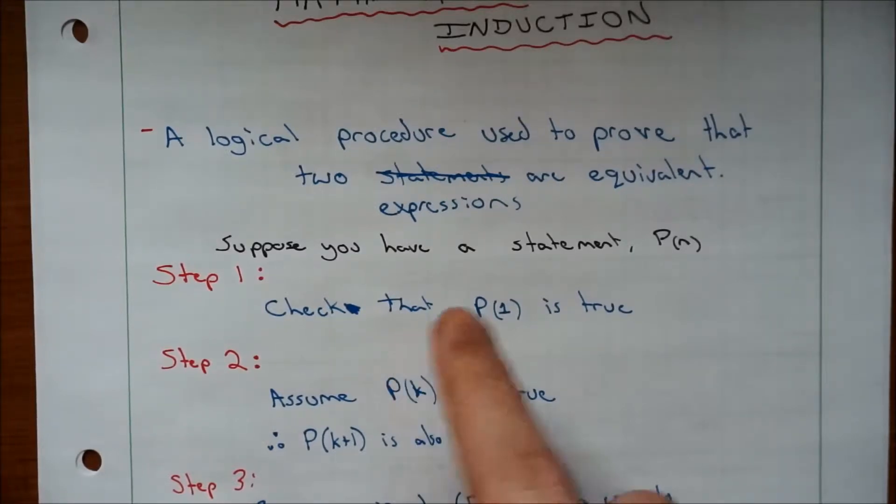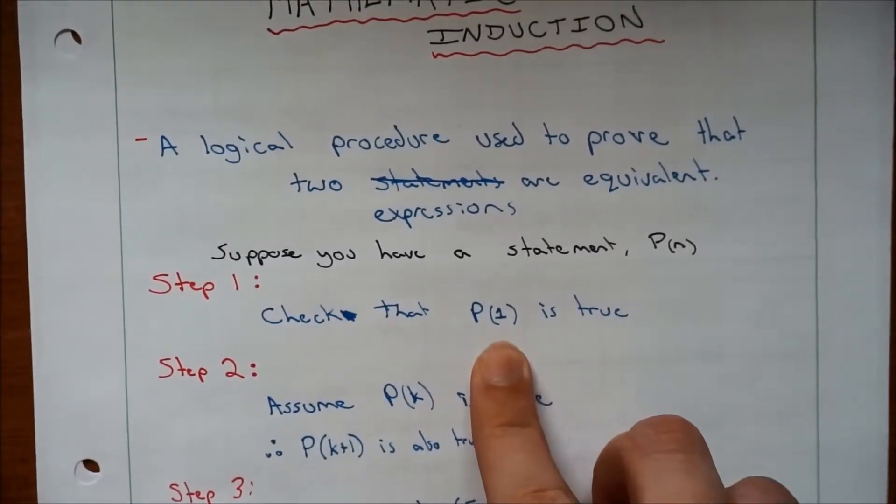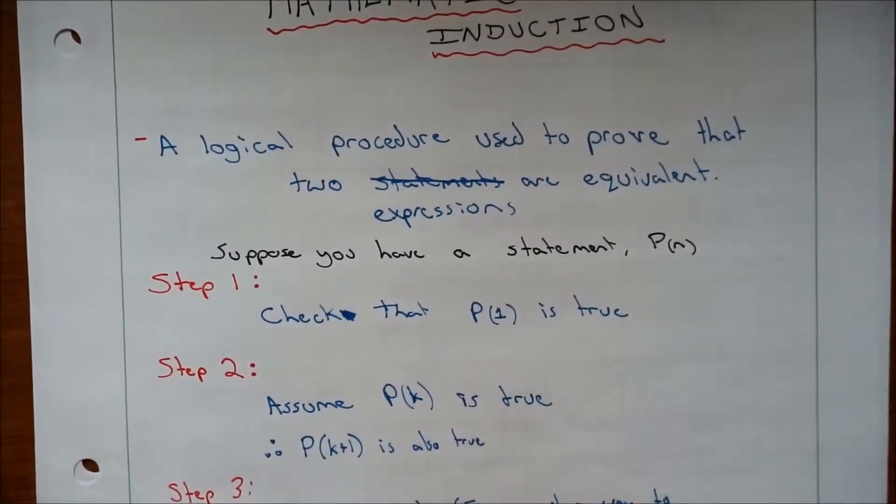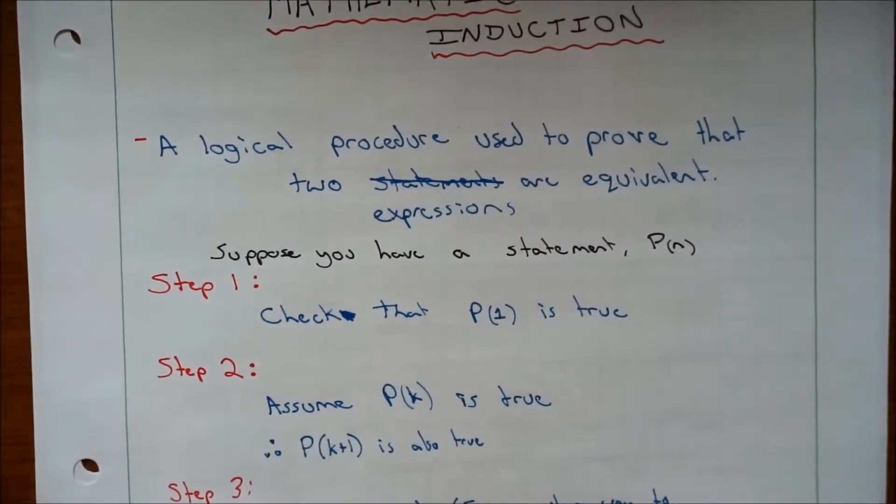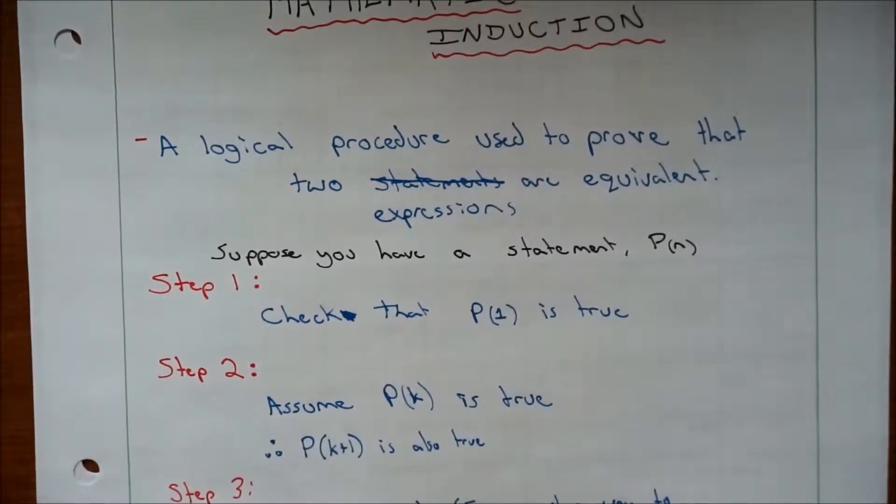So you start off with your statement, P(n), and you're going to check that P(1) is true. You're just going to throw 1 in there and see if it works out to the same thing on both sides of the equal sign. And if it does, that's good.